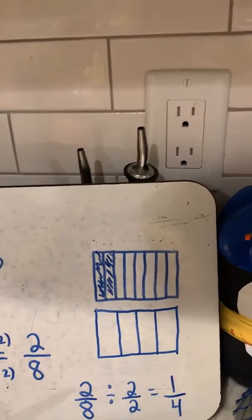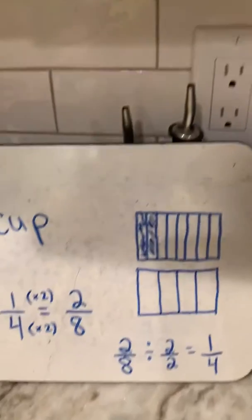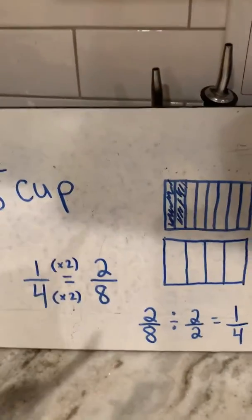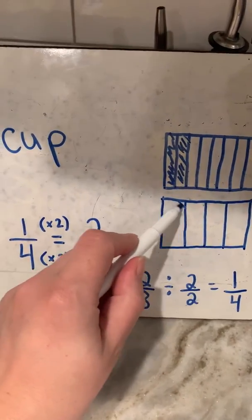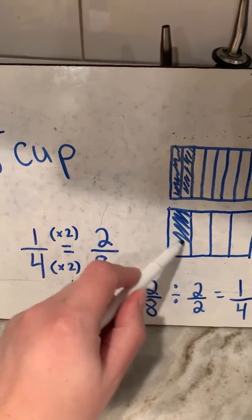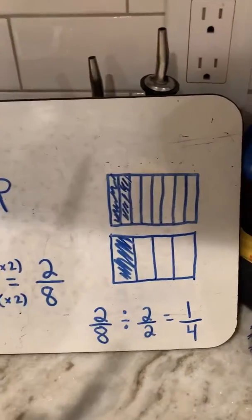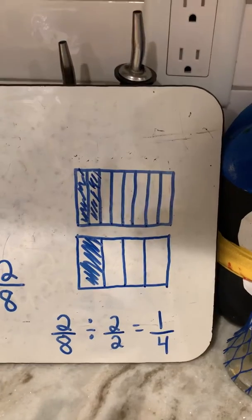So I know that two eighths simplified is the same as one fourth. Now you might be saying, well, how do you know that? So here's my second model divided into fourths and I shaded one of those fourths.